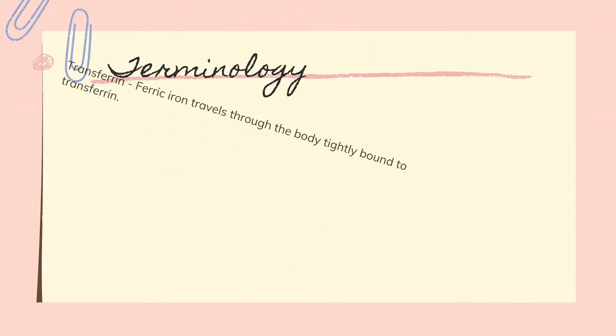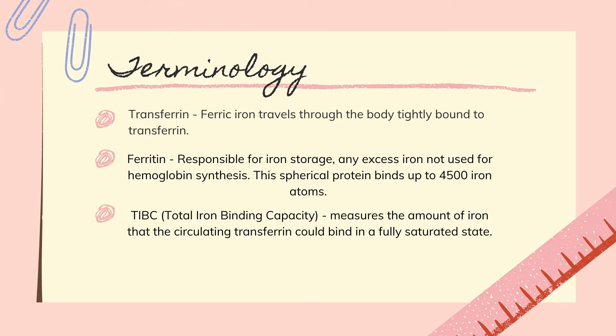The second key term is ferritin. Ferritin is the stored form of iron — any excess iron that's not used for hemoglobin synthesis is stored as ferritin. Ferritin is a spherical protein that binds up to 4,500 atoms of iron, and they are stored in our bone marrow, spleen, and liver.